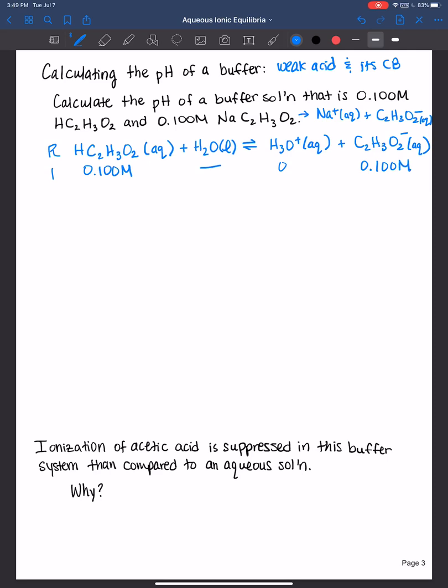I think this is something that might be new to many of you. Up until this point when we've been doing RICE tables, usually the products are zero. You just put something in to start and then we calculate the equilibrium concentrations in the end.